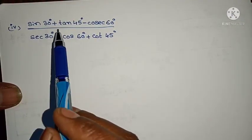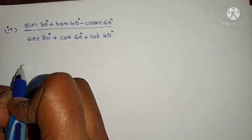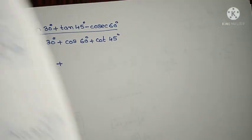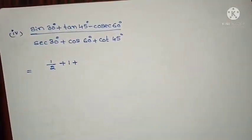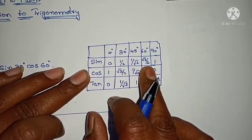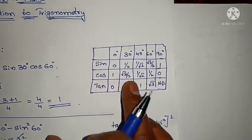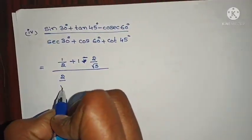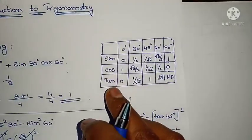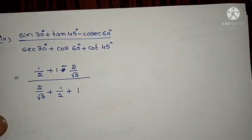The fourth question: (sin 30° + tan 45° − cosec 60°) divided by (sec 30° + cos 60° + cot 45°). Sine 30 is 1/2, tan 45 is 1, cosec 60 is the reciprocal of sin 60 = √3/2, so cosec 60 = 2/√3. Sec 30 is 2/√3, cos 60 is 1/2, cot 45 is reciprocal of tan 45 = 1.